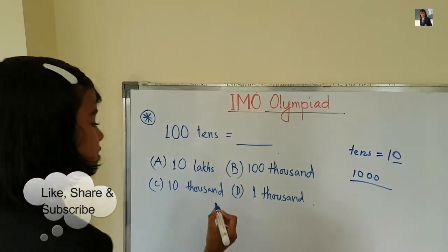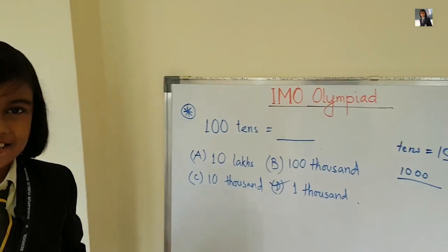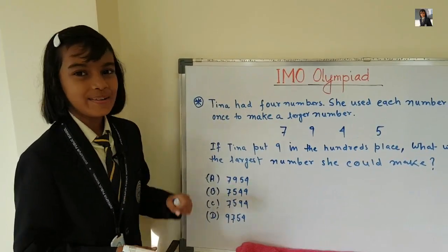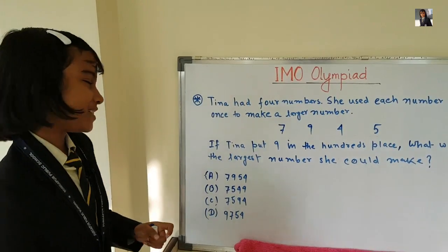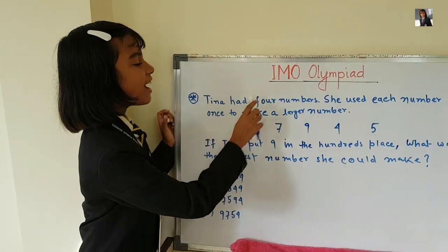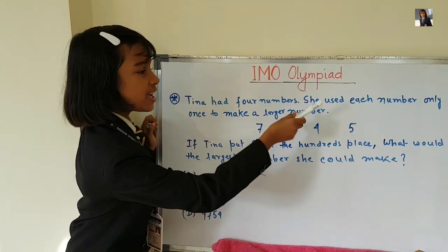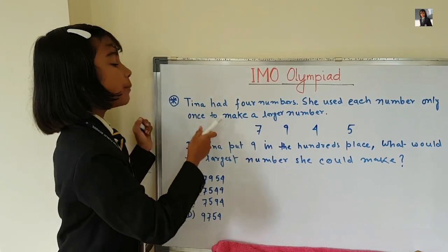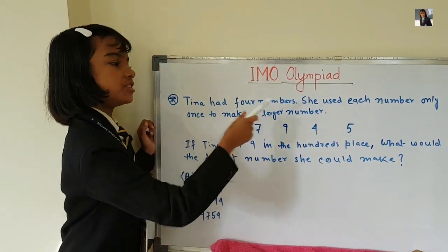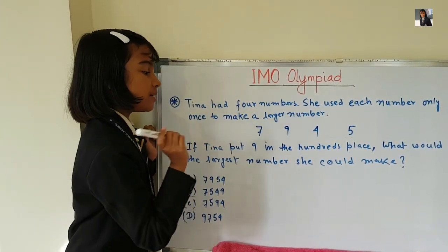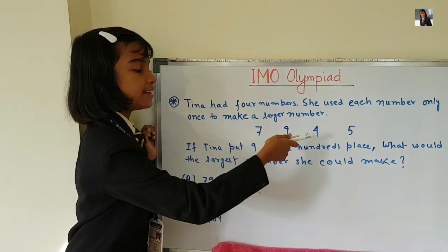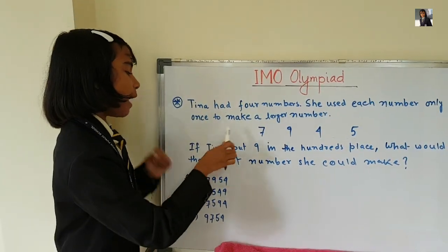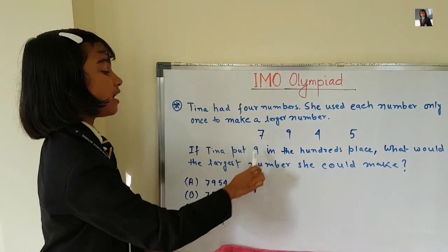So D, the number is the answer — one thousand. Isn't it very easy? Now let's do this question. Tina had four numbers. She used each number only once to make a larger number. The numbers are seven, nine, four, and five.